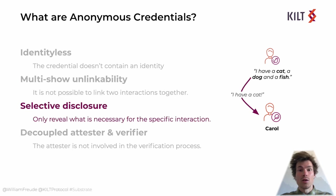Next, we have selective disclosure. If you have multiple attributes but do not want to show all of them, you can choose any subset for your presentation. Let's say you want to prove you have a valid driver's license and your attributes also include your address, which you don't want to reveal. Then you just disclose everything but your address from the proof. This feature is also pretty crucial for privacy, as you want to minimize the attributes you publicly show to a verifier as much as possible, since they can reveal something about you.